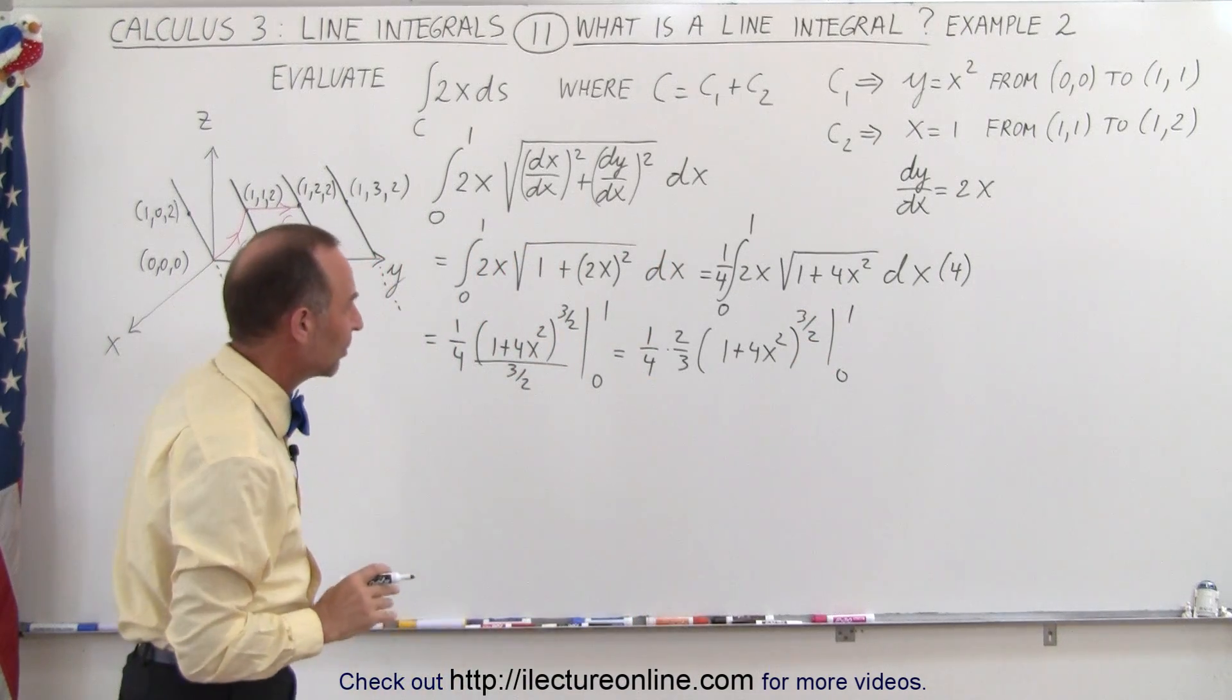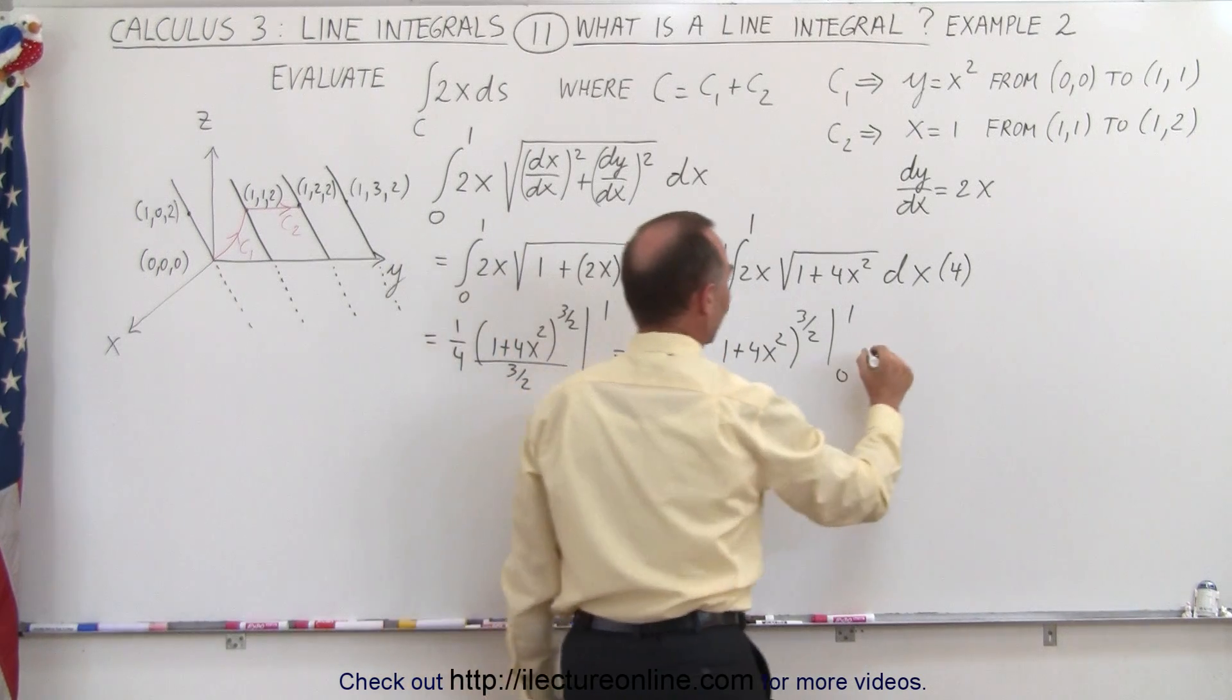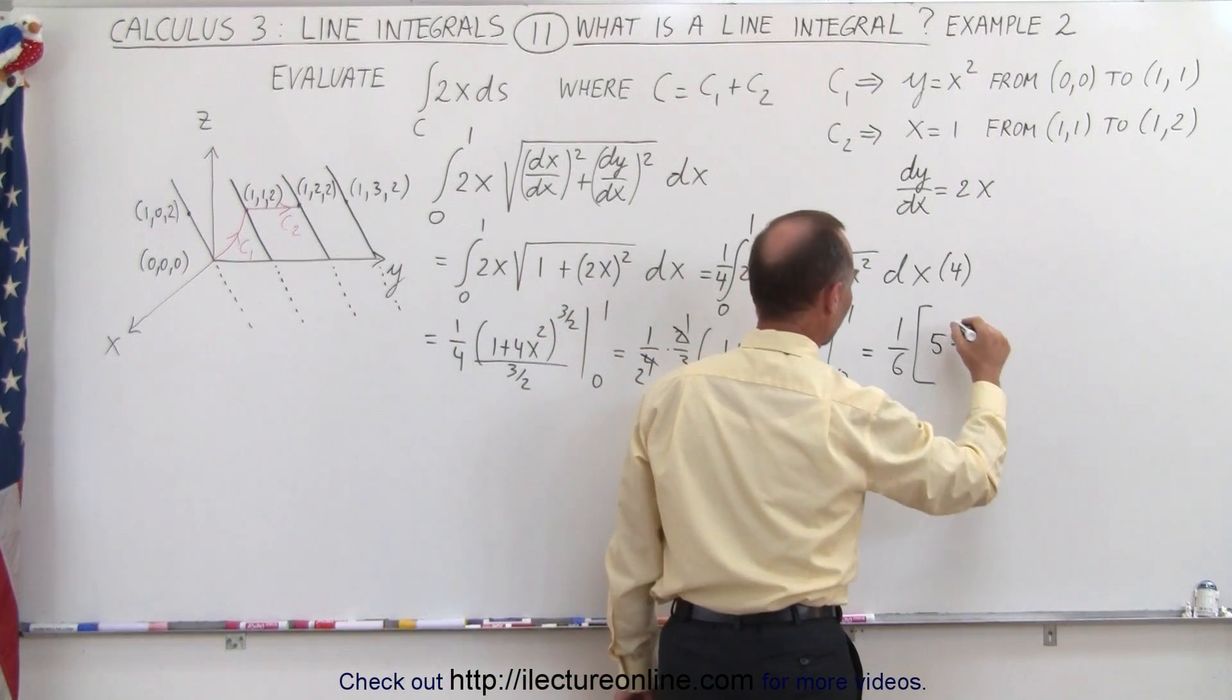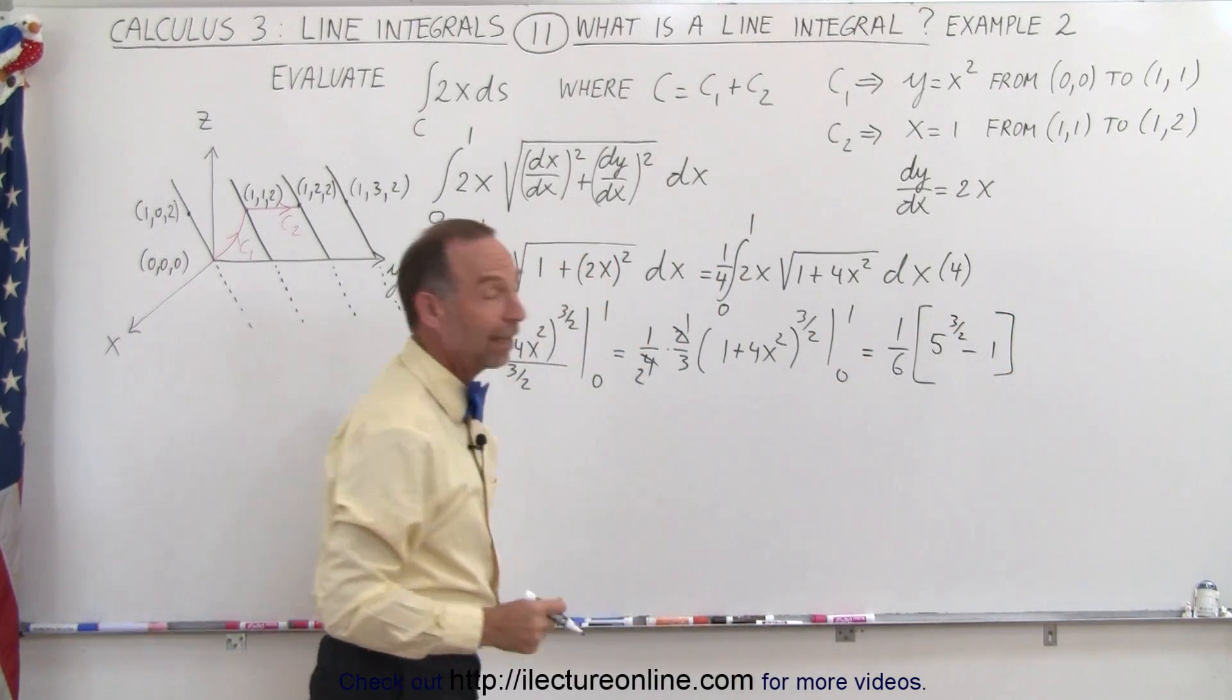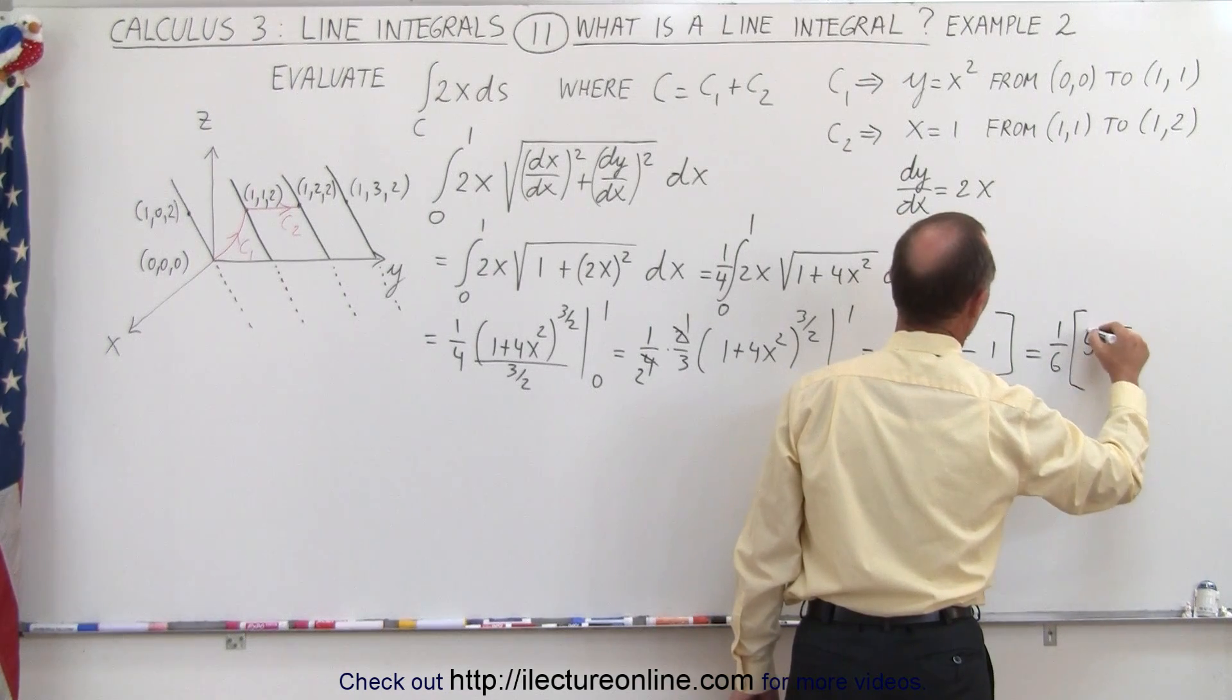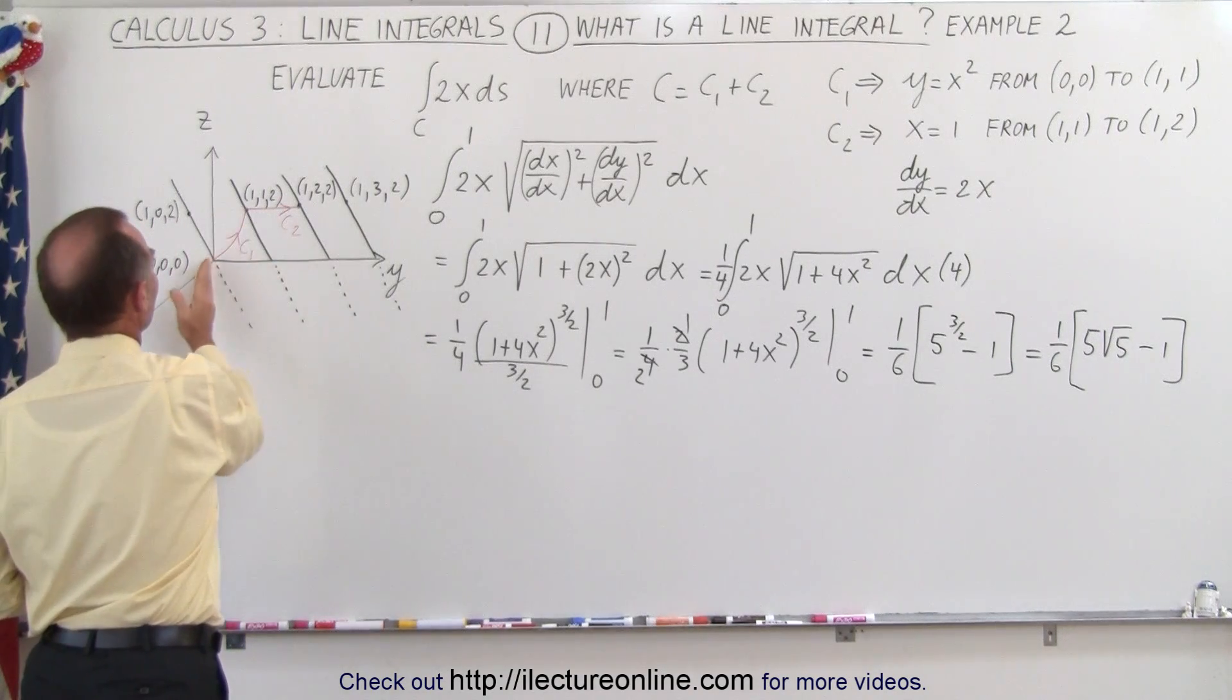And now we're ready to plug in some limits here. So when we plug in the upper limit, we get 4 times 1 plus 1 is 5, and this simplifies to 1/6, so this becomes 1/6 times, plug in the upper limit, we get 1 plus 4, which is 5 to the 3/2 power, minus, when we plug in the lower limit, we get 1 to the 3/2, which is simply equal to 1. And so, well, that's probably the best we can write, or if you like it, we can write this as 1/6 times (5√5 - 1). Either way, that's the answer, so that would be the area underneath this curve right here, from here to there.